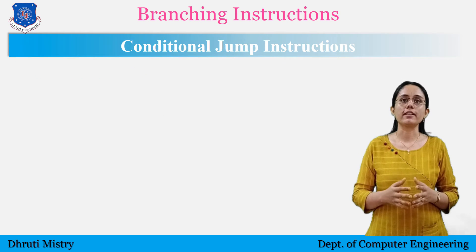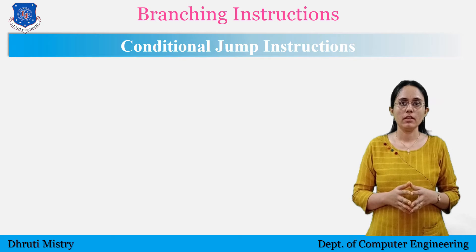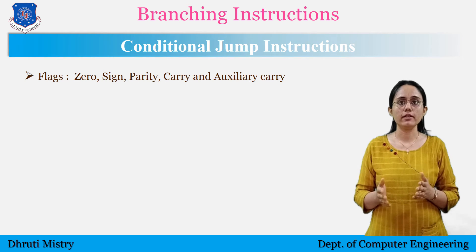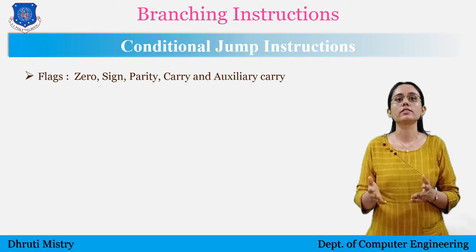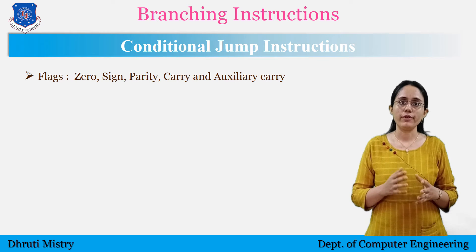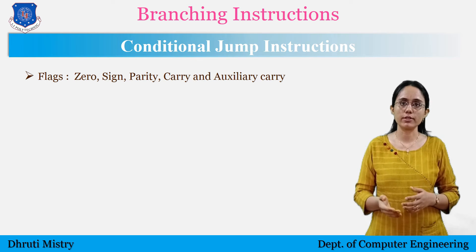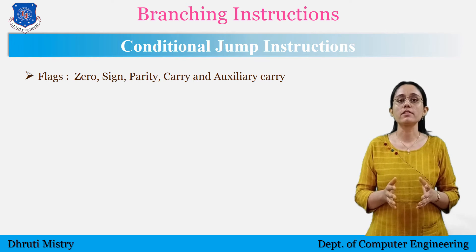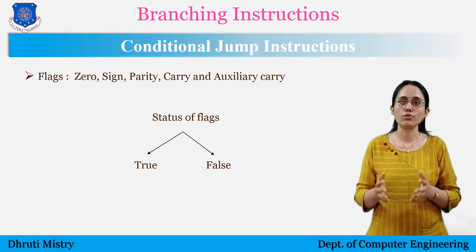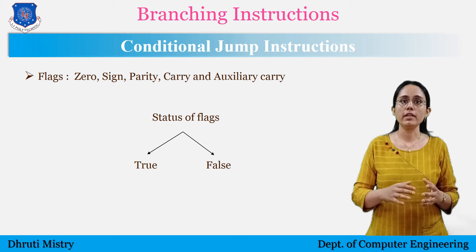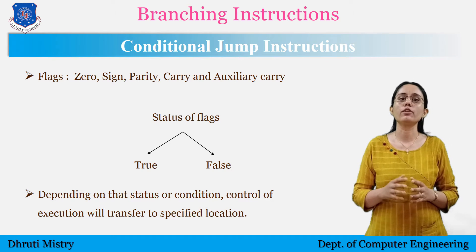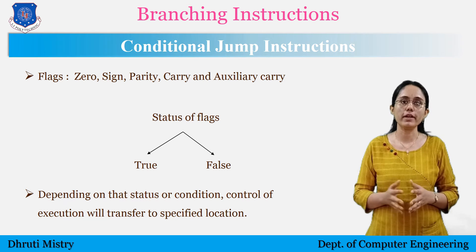The next category is conditional jump. We have flags like zero, sign, parity, carry and auxiliary carry in 8085. When a conditional jump instruction is executed, the processor will first check the status of the flags — whether it is true or false. Depending on the status or condition, the control of execution will transfer to the specified location.